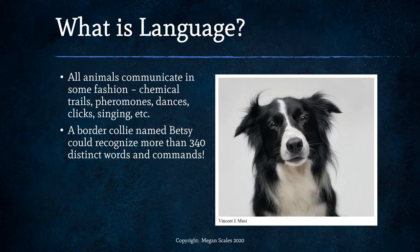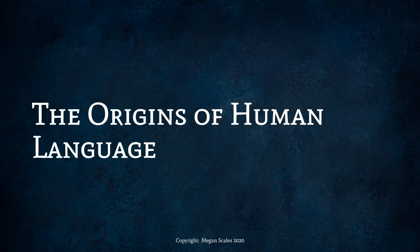All animals communicate in some fashion, whether it be through chemical trails, pheromones, dances, clicks, singing, etc. One border collie named Betsy could recognize more than 340 distinct words and commands. So what is human language? Since we're asking ourselves that, let's look into the origins — where did it come from?